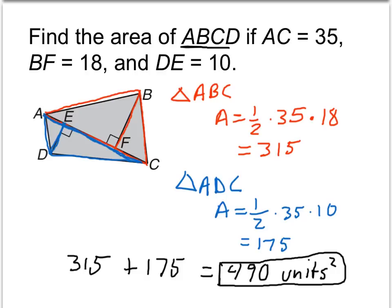And so all we had to do is split it up into two triangles. We had the red triangle, which is this entire triangle, and the blue triangle, which is sort of an upside-down triangle with the base of AC.